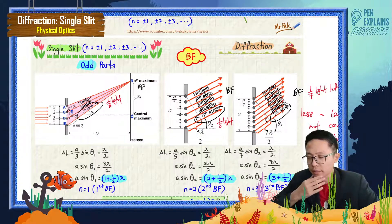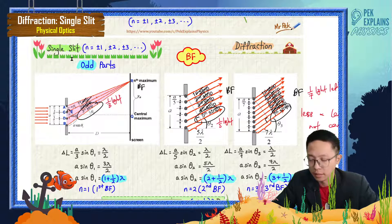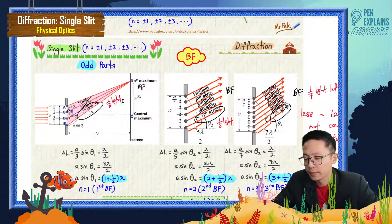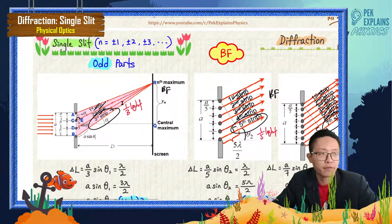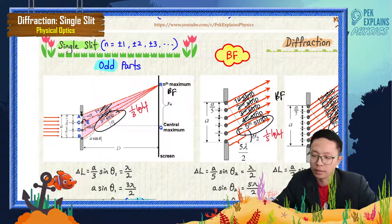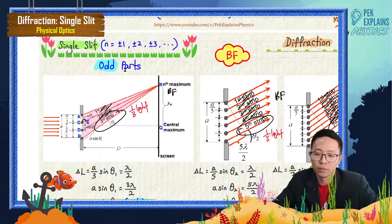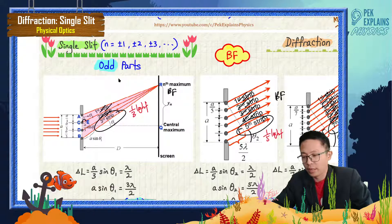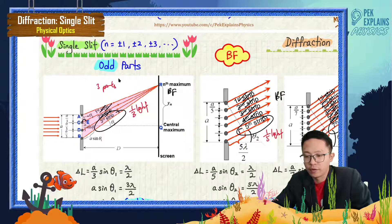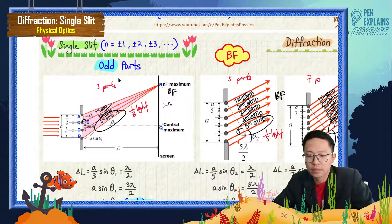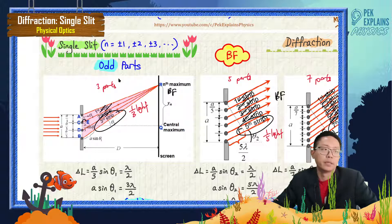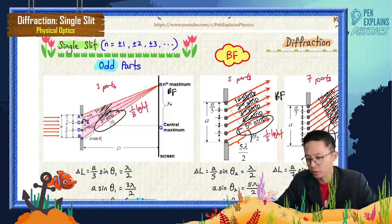Alright, now let's look at how we derive the formula for bright fringe in single slit diffraction. For bright fringe, we divide the slit into odd parts — that means we have 3 partitions, 5 parts, 7 parts, 9 and so on — all the odd numbers.